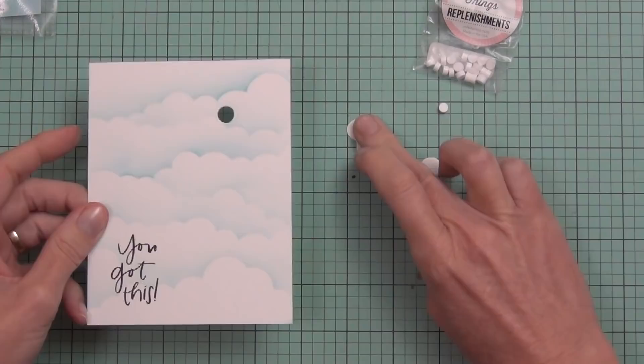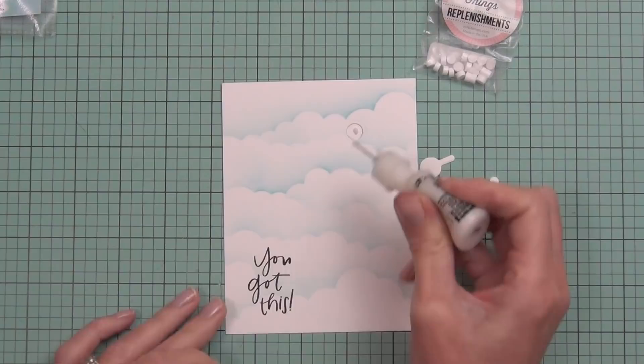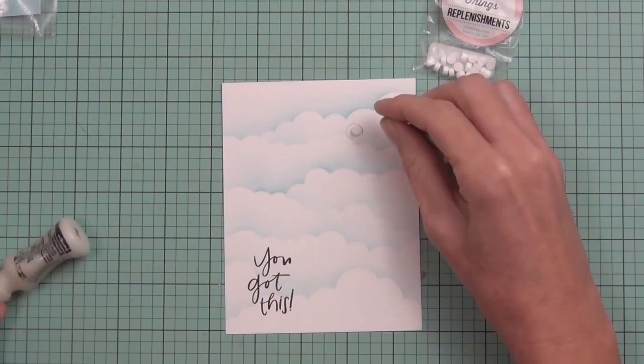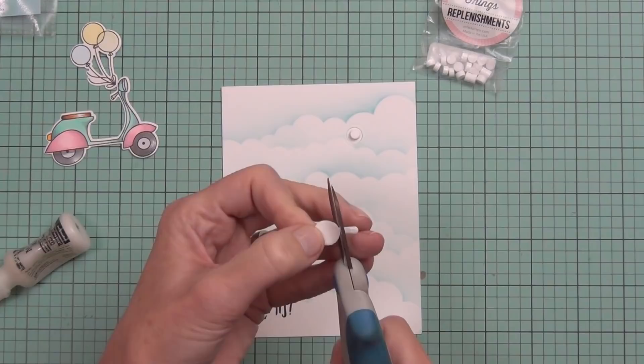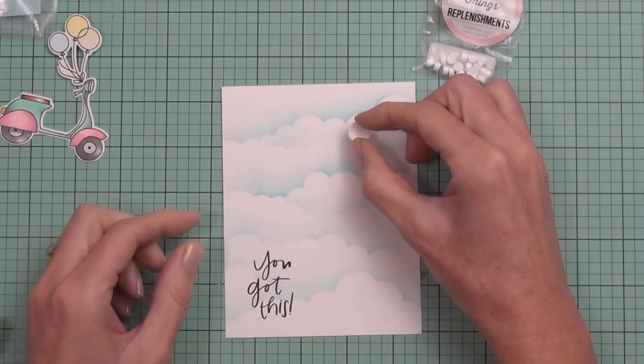I've also die cut a couple of other circles which are a little bit bigger, and I'm adding some matte medium. This is a slide and swing replenishment from MFT. These little dots are made of plastic, so they swing and slide really easily. But if you don't have one of these, you could use a really small button or build up your own element with die cut pieces.